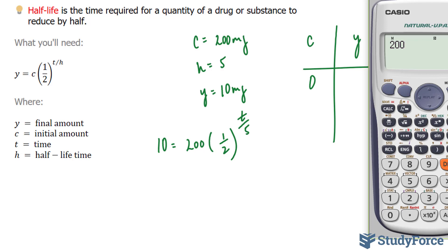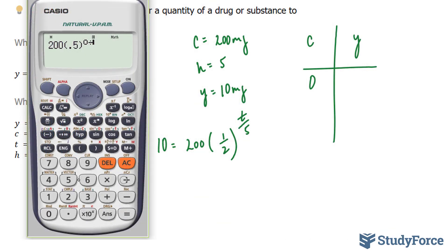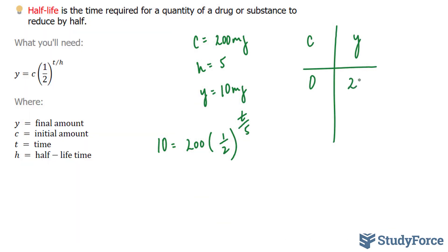So 200 times half, which I'm representing by 0.5, to the power of 0 over 5. And I end up with 200. Let's write that in. Let's try it one hour.